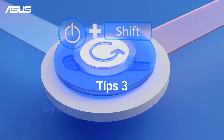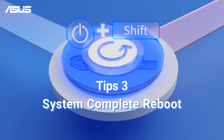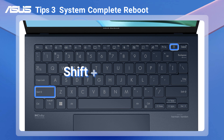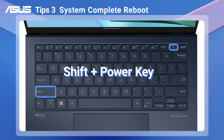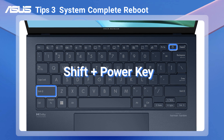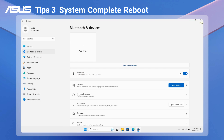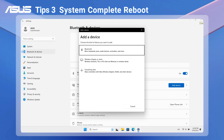If the problem persists, you might consider performing a complete reboot of your system. Hold down the Shift key to power down your PC completely. Then restart it and try pairing and connecting via Bluetooth again.